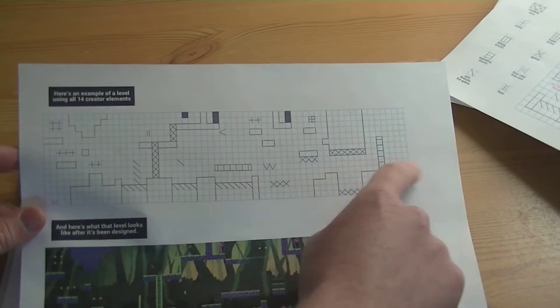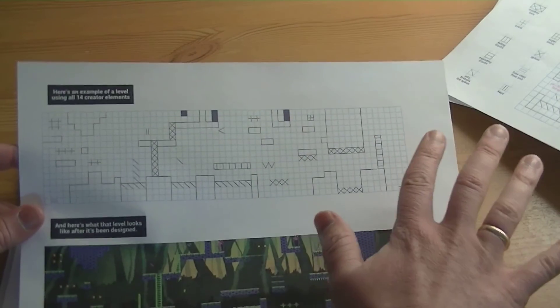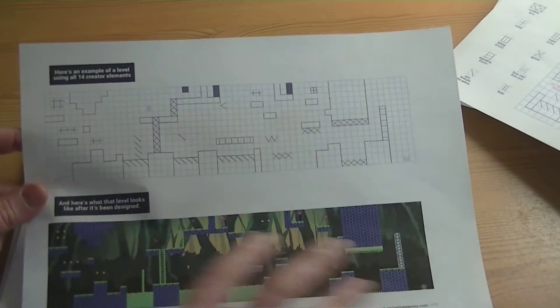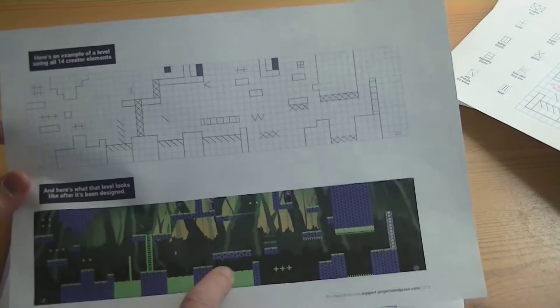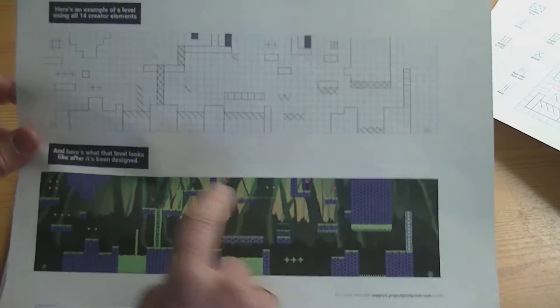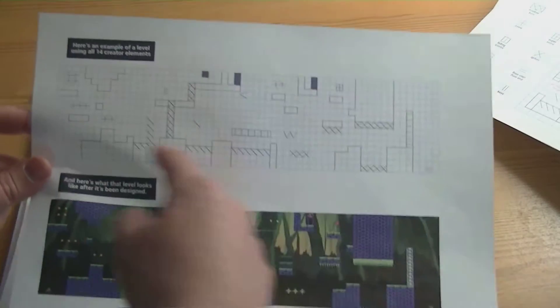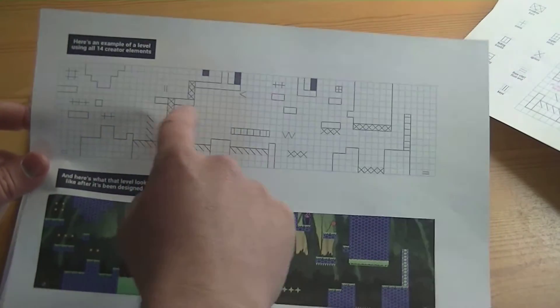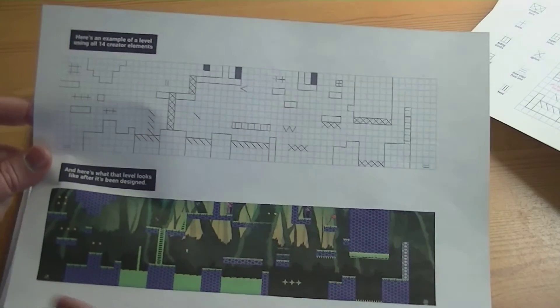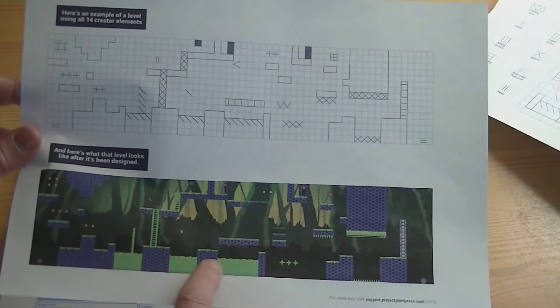So as you draw all these things, you pretty much design how it sets up. And then once it's in the app, you get to customize how it looks. So this is a quick example of what one level would look like from their website. They've drawn out and added different terrain, spikes, ladders, and pits, and you can see how it relates into the game.